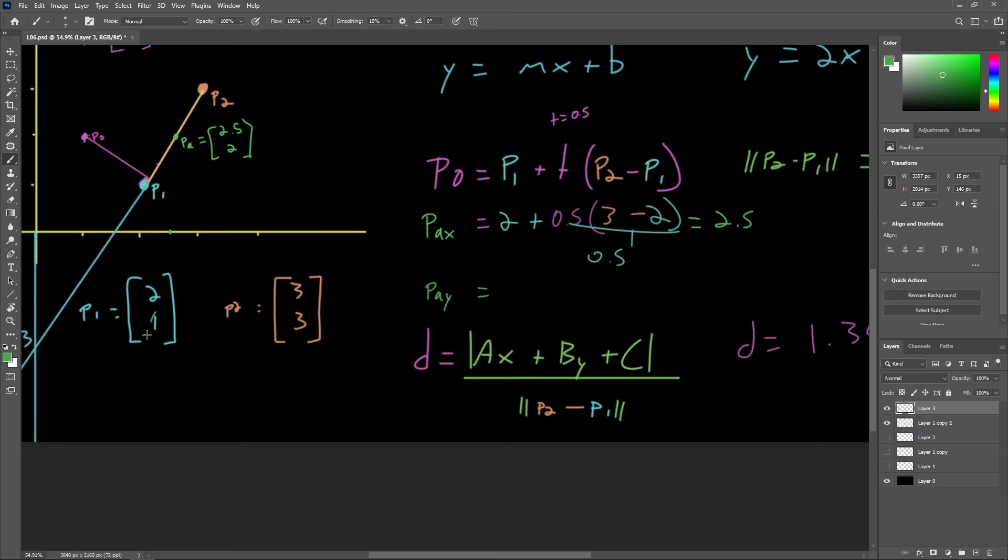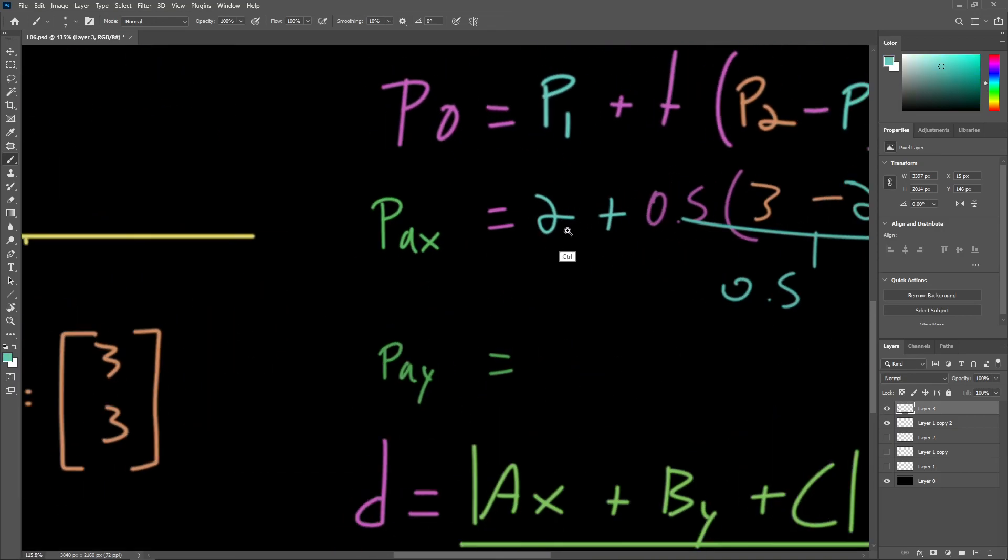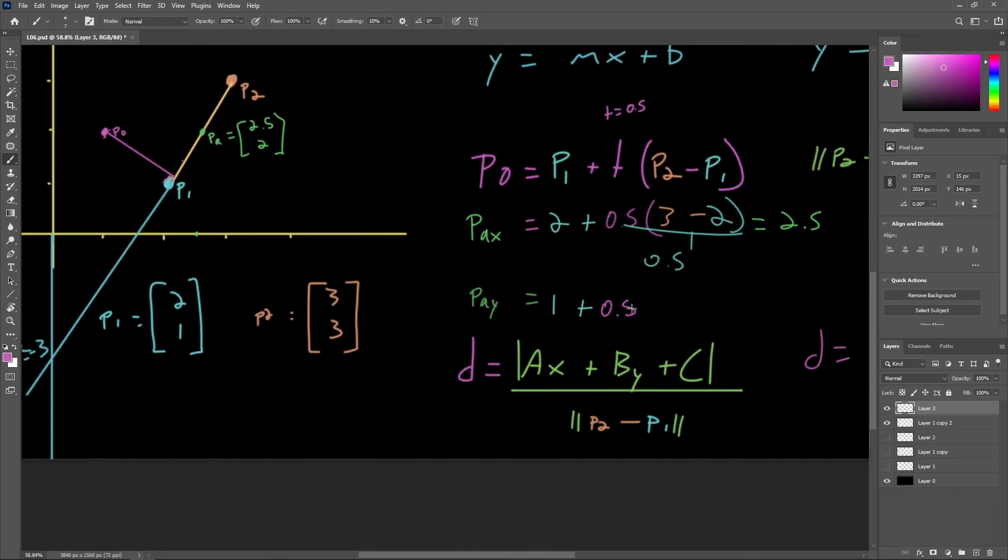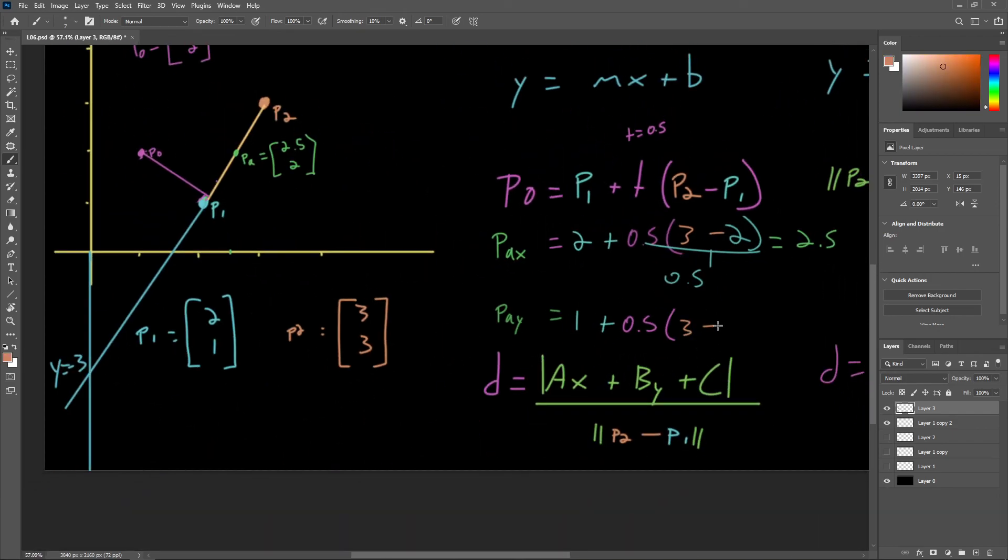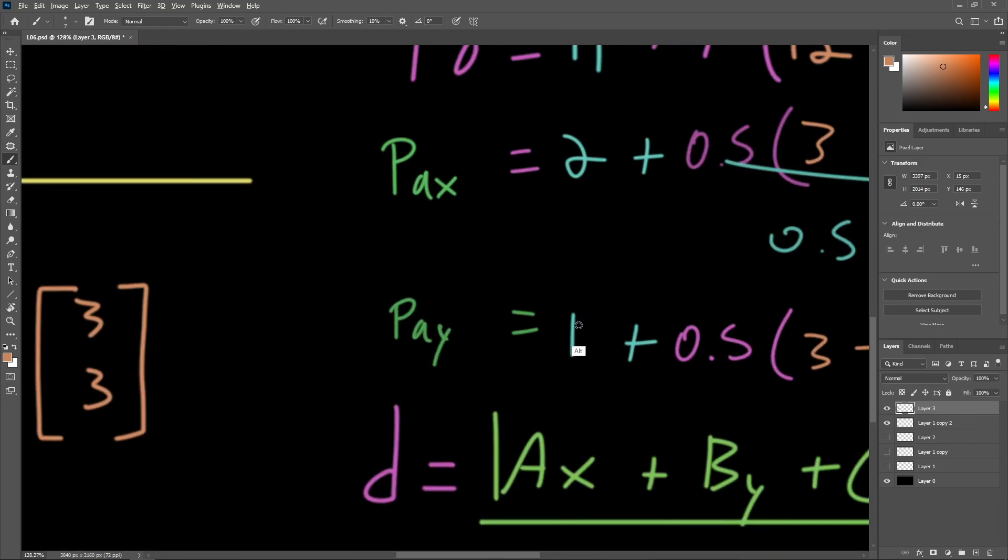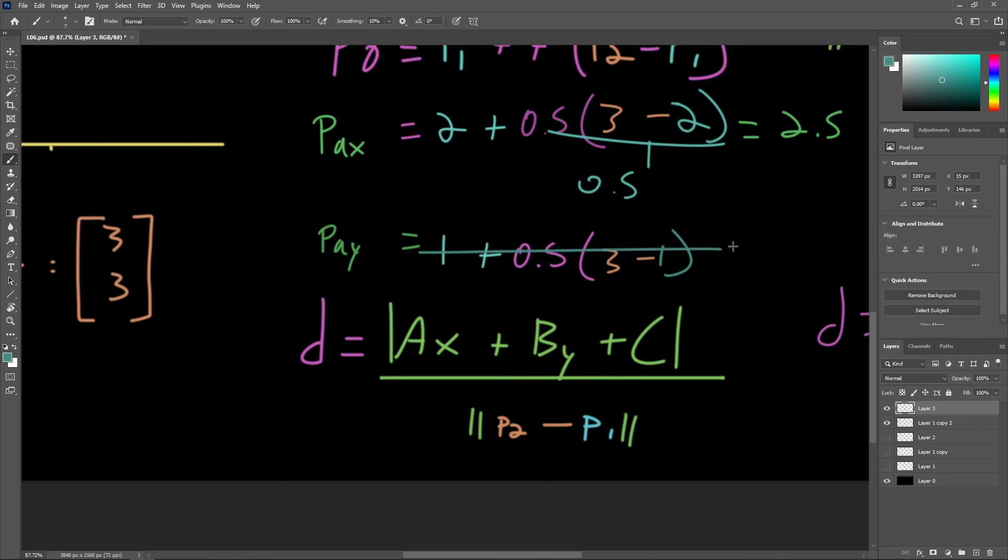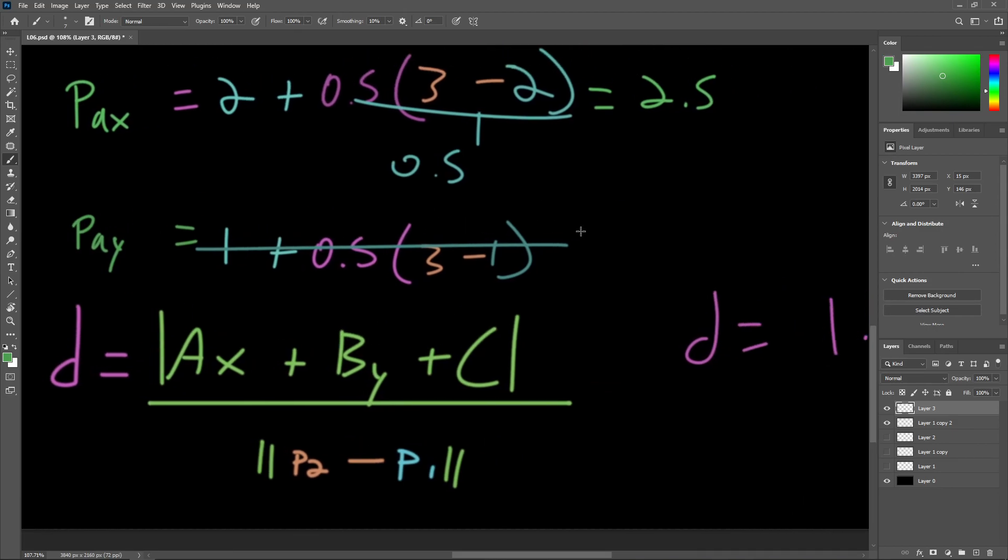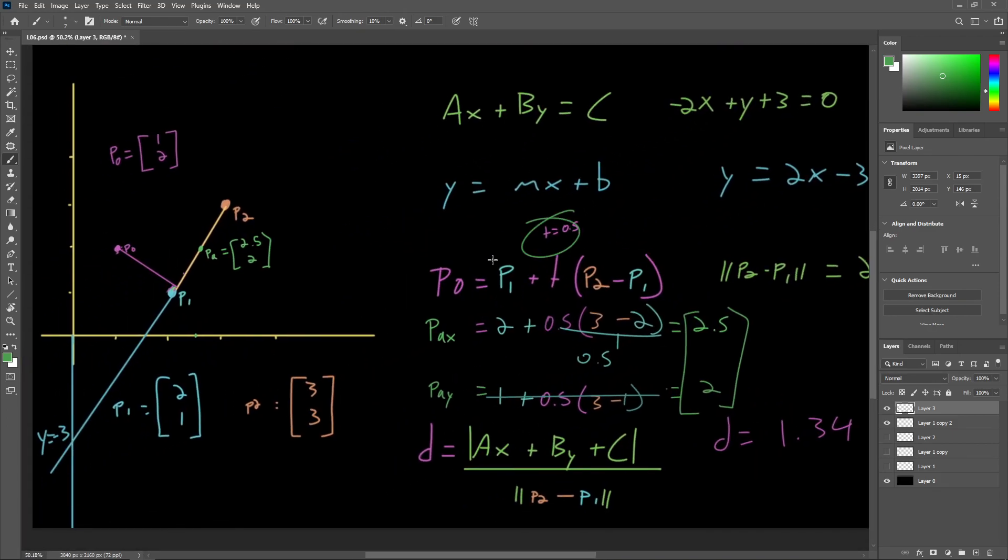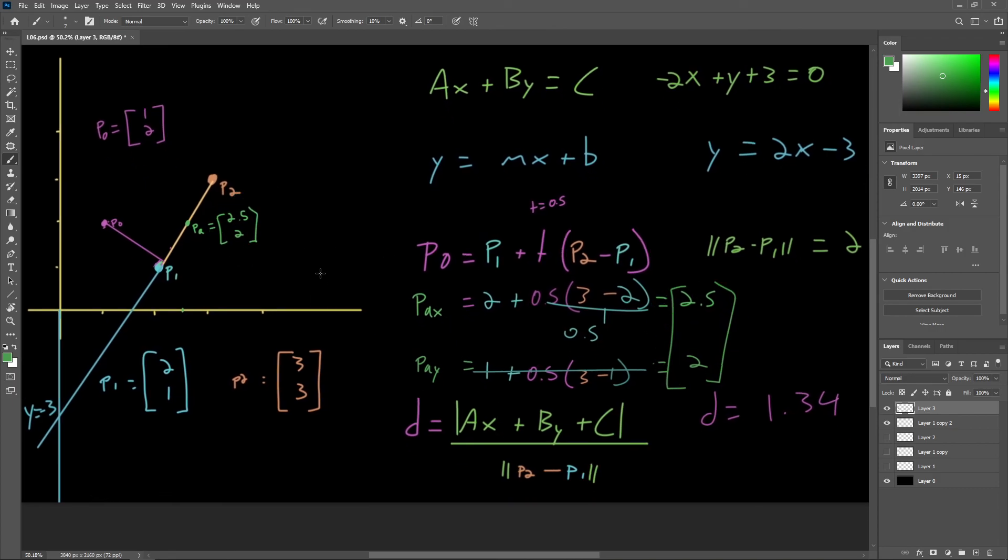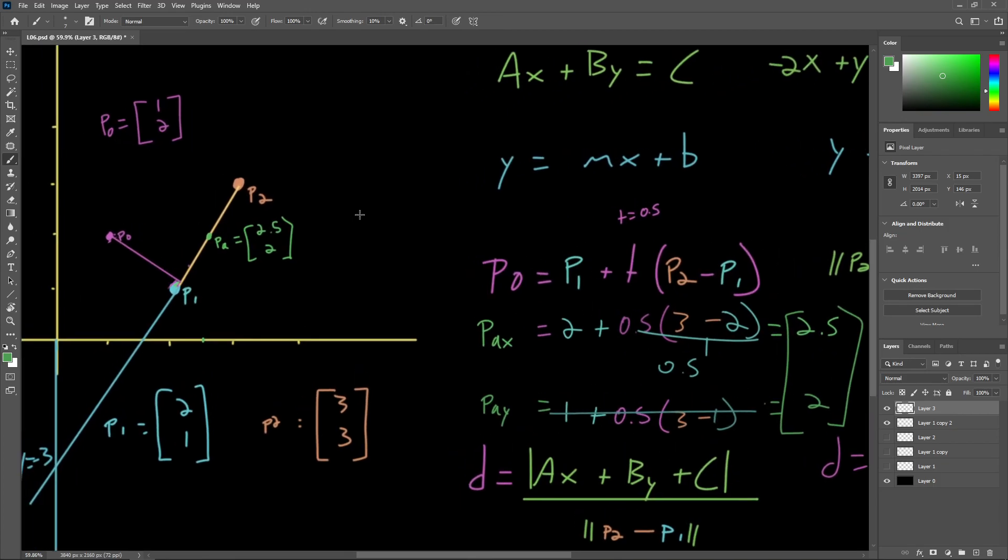Again, quickly solving for P alpha Y, we can see that the Y component of P1 is 1 plus the T value 0.5 times Y component of P2, so 3 minus 1. Quickly solving this, 3 minus 1 is 2 times 0.5 is 1 plus 1 is 2. So 2.5 and 2. By substituting in the T value that we know corresponds to the position along this line segment, we ended up with precisely the correct set of coordinates here. So hopefully that was helpful in just seeing how all these equations work together and what we can accomplish using them.